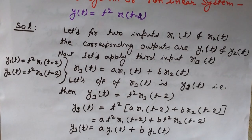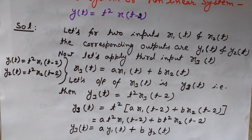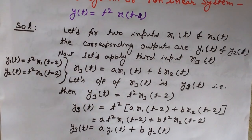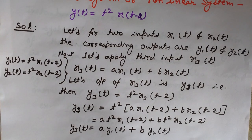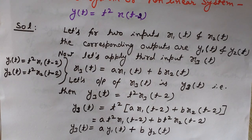I think you got the concept of linearity of a system. In the next videos we will see other properties like causal and non-causal systems, stable and non-stable systems, instantaneous and dynamic systems, and so on. Keep watching Engineering Made Easy, and if you have not subscribed to my channel yet, please subscribe and click the like button if you liked this video.